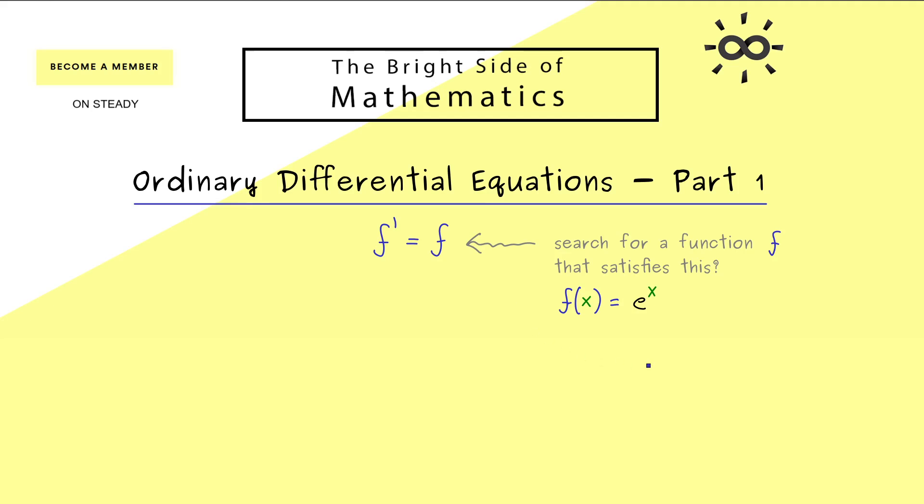Second, in the case that we find a solution, what can we say about the uniqueness of this solution? Moreover, besides the existence and uniqueness of solutions, you could also ask questions like what is the domain of definition for a solution here and can it be different for different solutions?